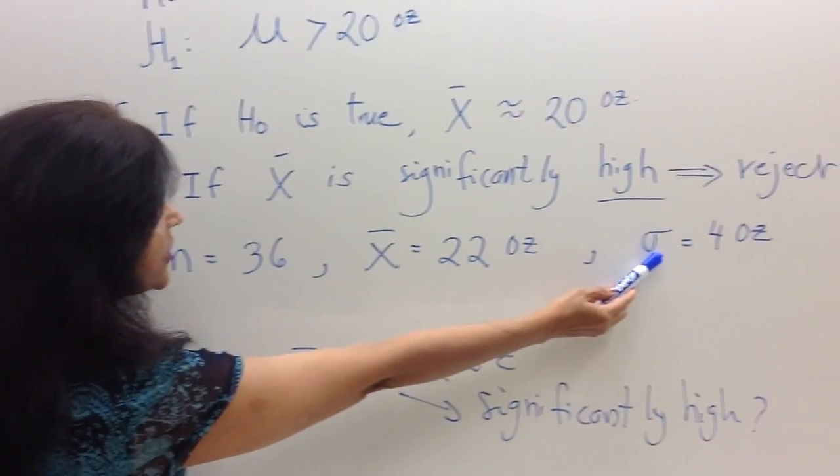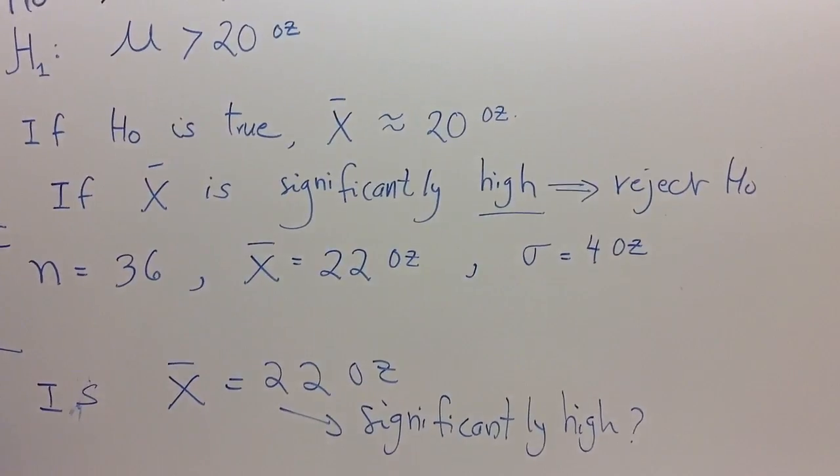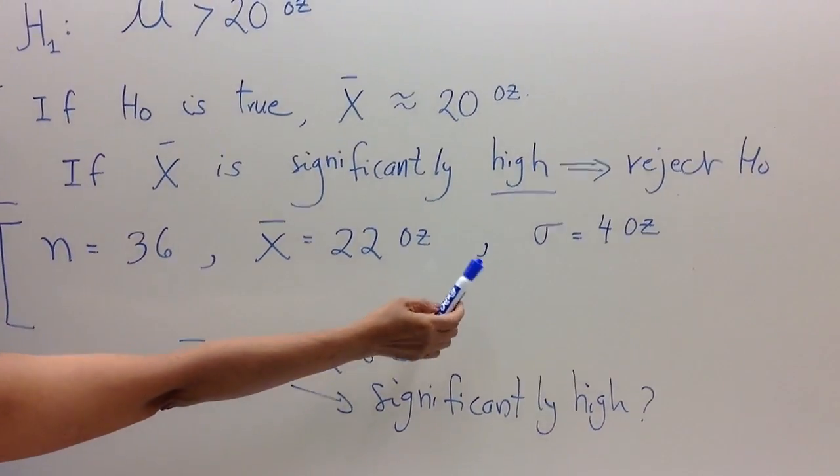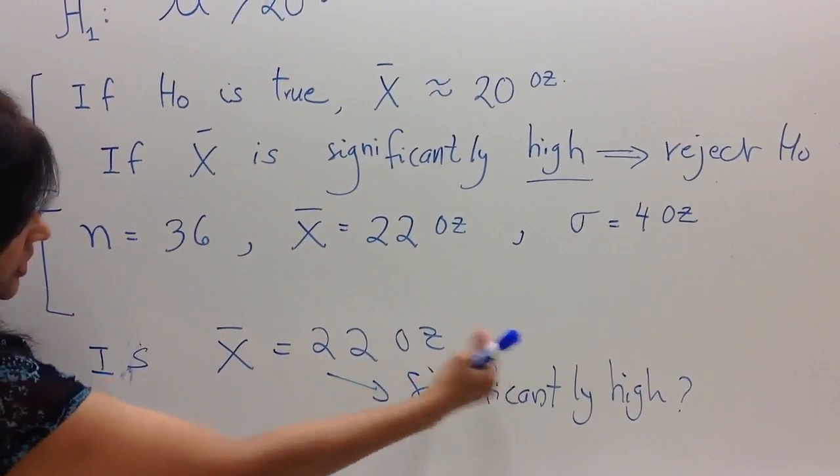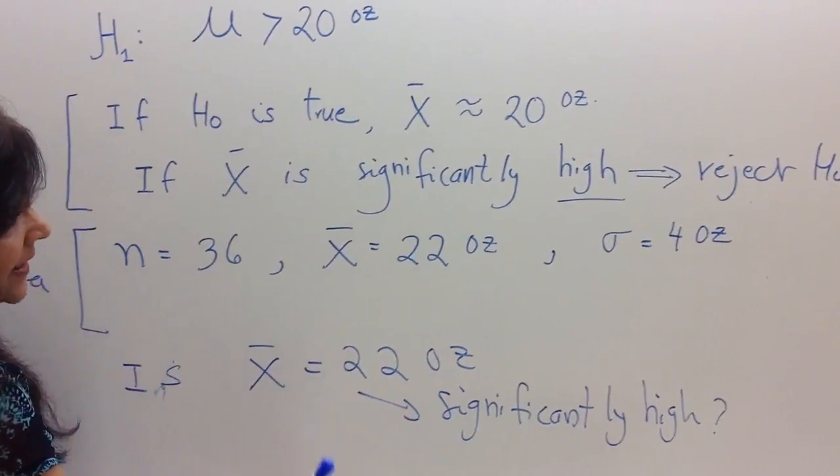Let us also suppose that we know that the standard deviation is 4 ounces. We remember standard deviation is a measure of variability. Not all products will have the same weight.